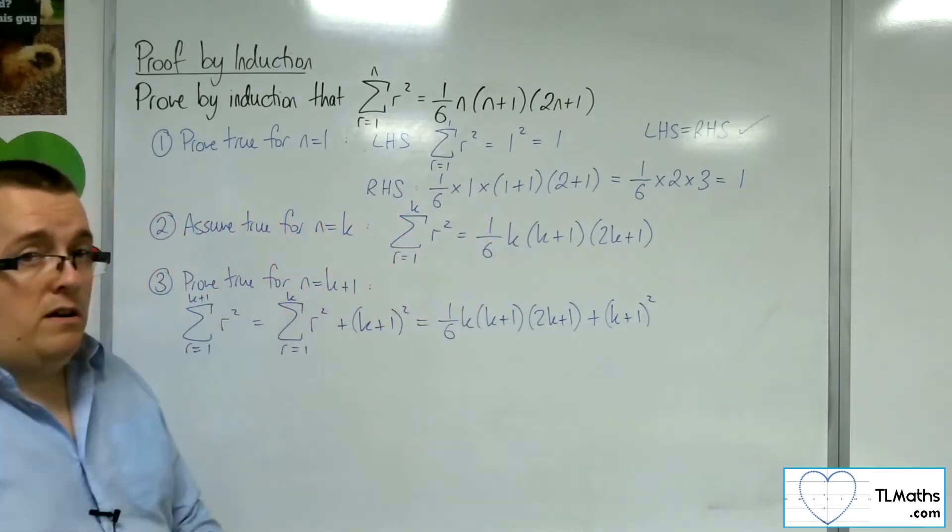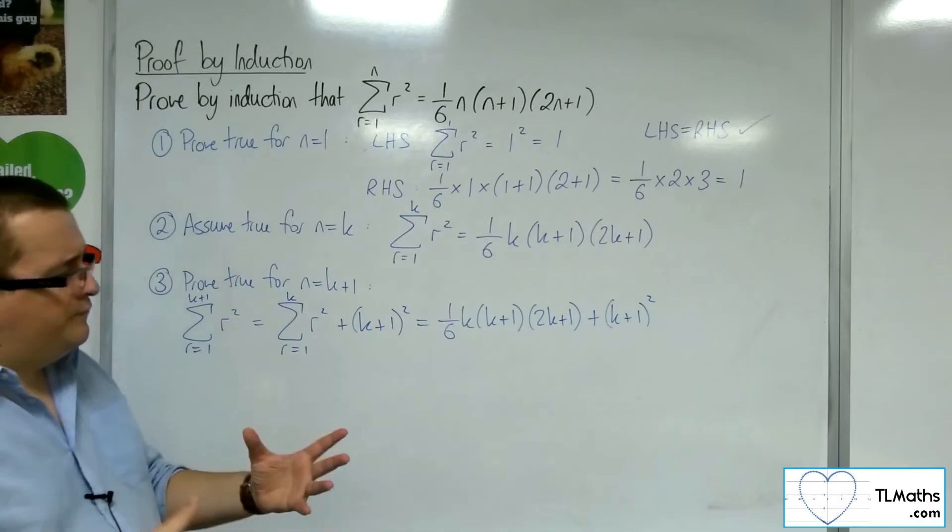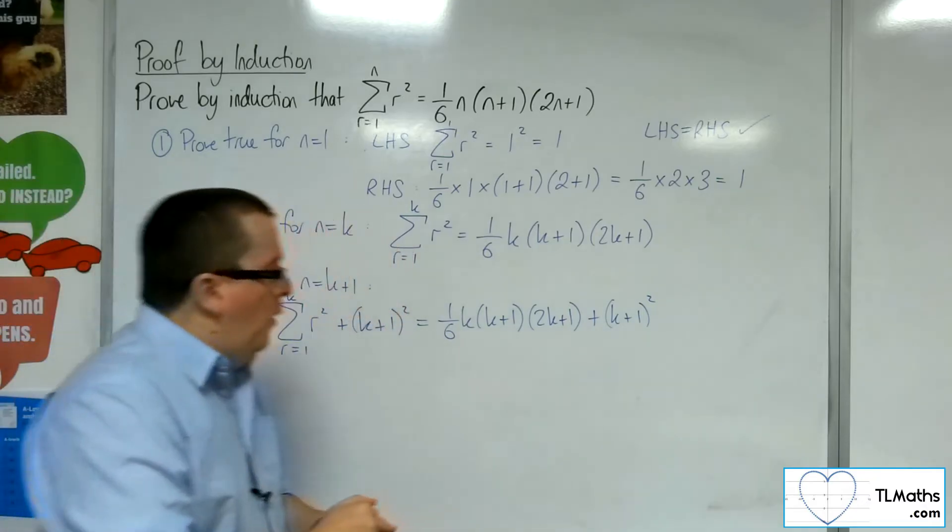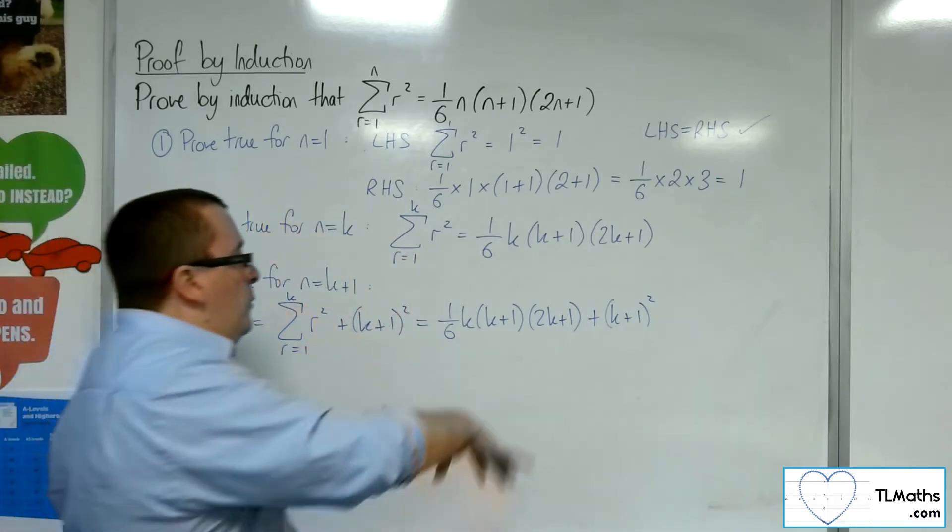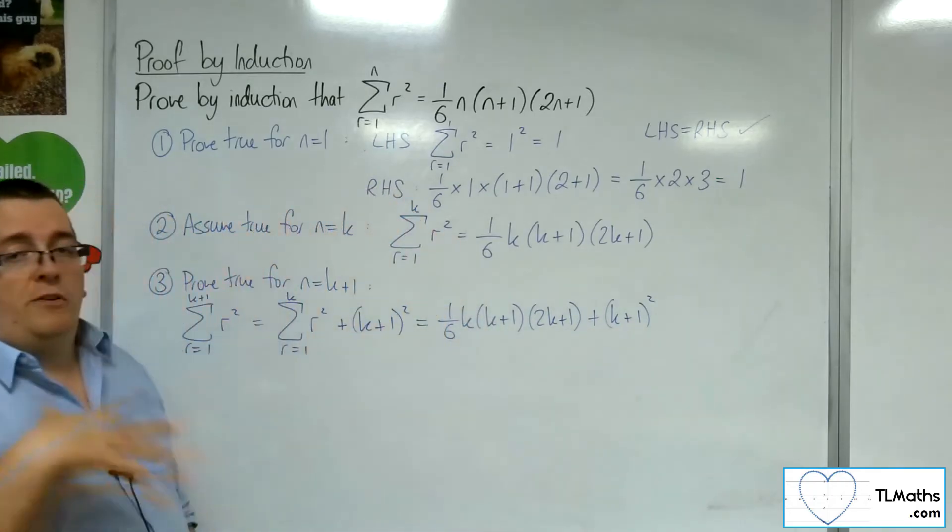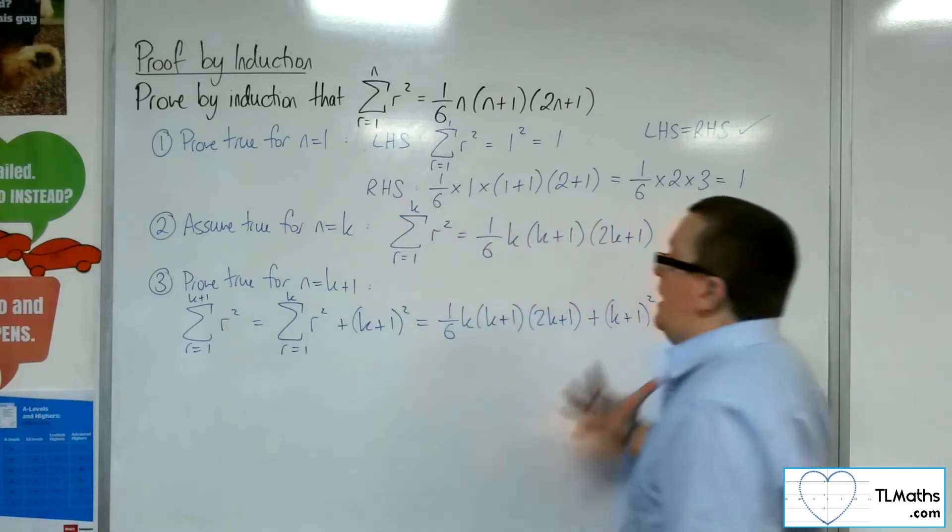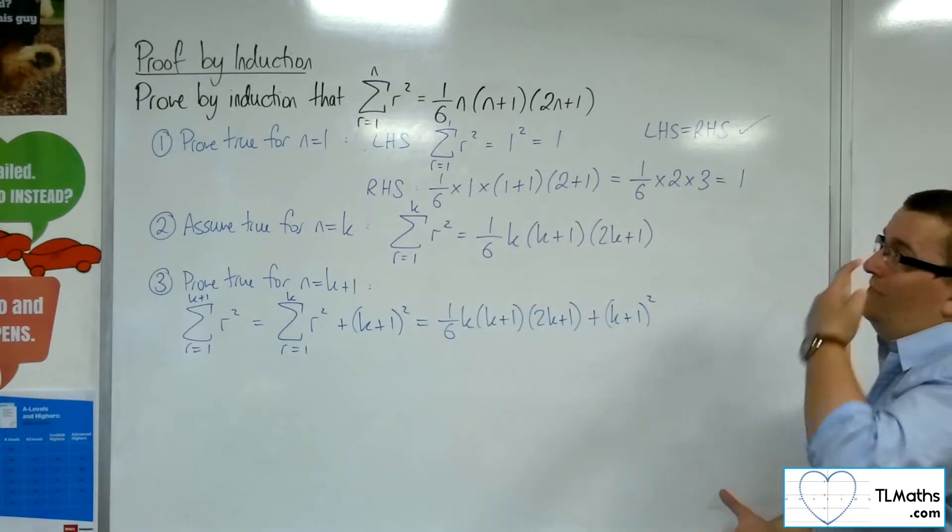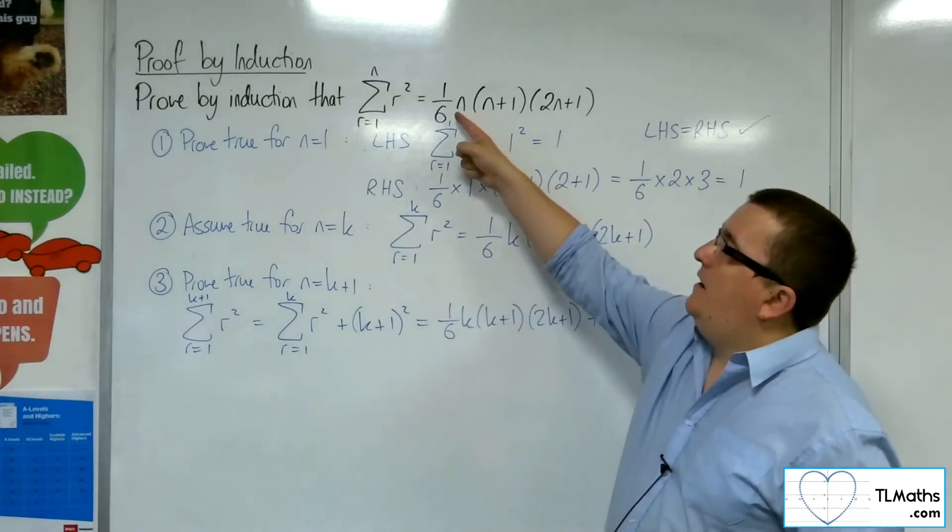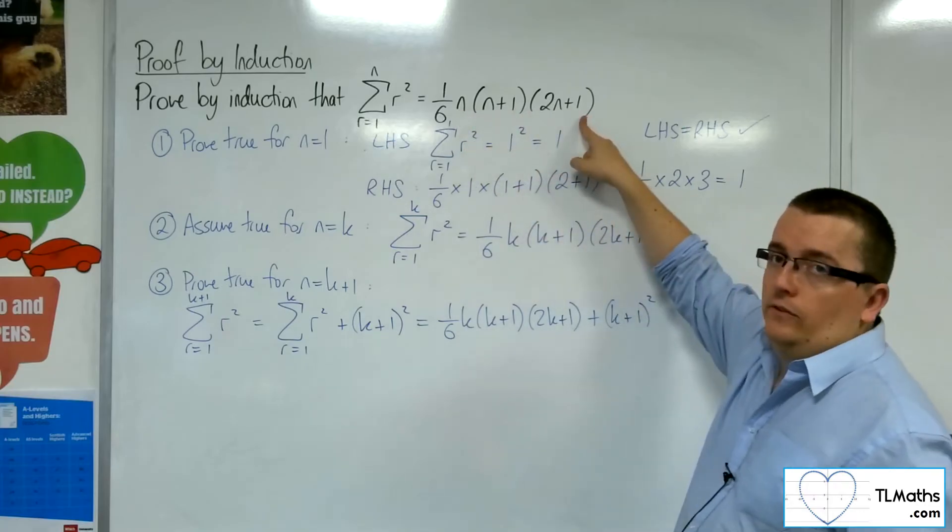Now, our target here, what is our target? What we want to do here is that we have these two terms. We want to combine them and factorize them in such a way that what we end up with is precisely the same as substituting n for k plus 1 in this.